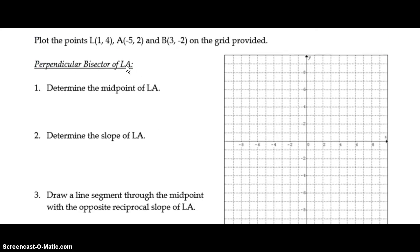So here's our example. We're going to draw a triangle LAB. So L is at 1, 4. A is at negative 5, 2. And B is at 3, negative 2. Once again, using a ruler, connect those to make a triangle.